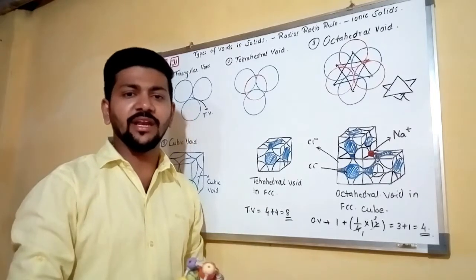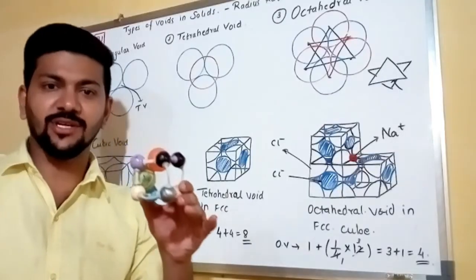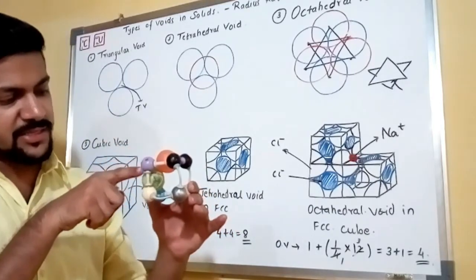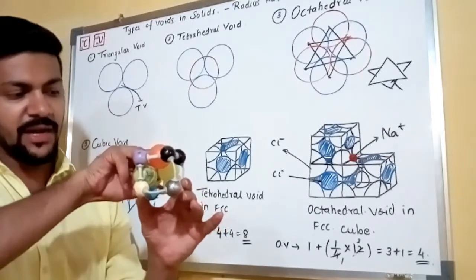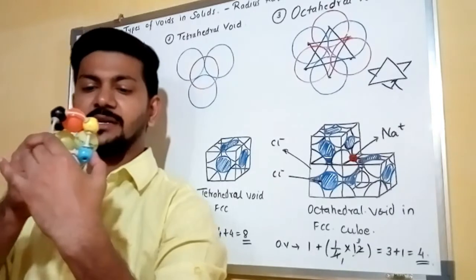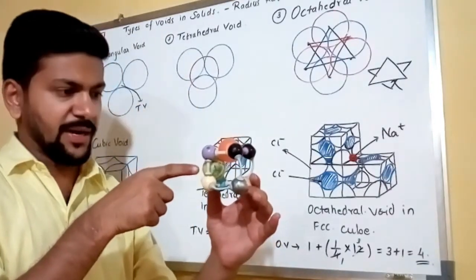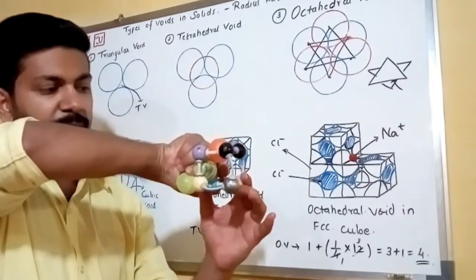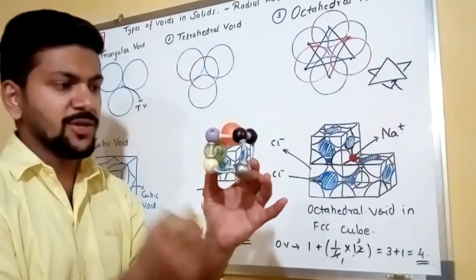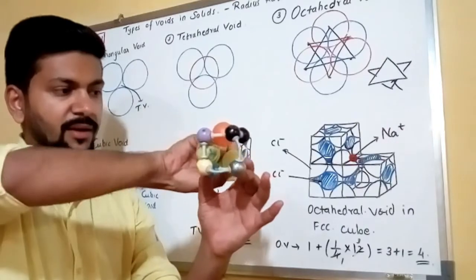To identify an octahedral void in an FCC structure, consider the face-centered particles. An orange particle and a green particle at the face centers are in contact with each other. Adding particles from adjacent faces, this green particle is in contact with particles from all surrounding faces — it is in contact with 1, 2, 3, 4, 5, 6, 7, and 8 neighboring particles.